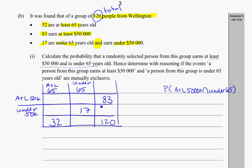My totals must add up to 120. If 83 total earn at least $50,000, then 120 minus 83 gives me 37 in the under $50,000 row, because 83 and 37 add up to 120. Working backwards again, 120 minus 32 gives me 88 for the under-65 column total. Now I can start on the individual cells. Along the under-$50,000 row I've got a total of 37, and 17 have already been accounted for, so 37 minus 17 gives me 20.